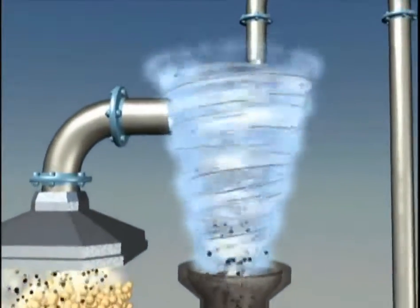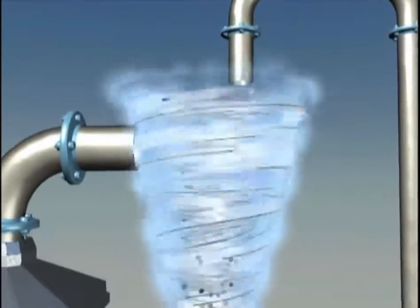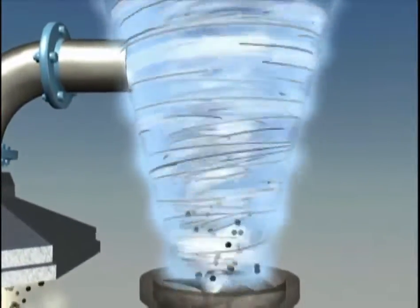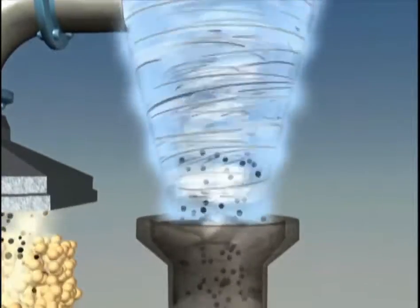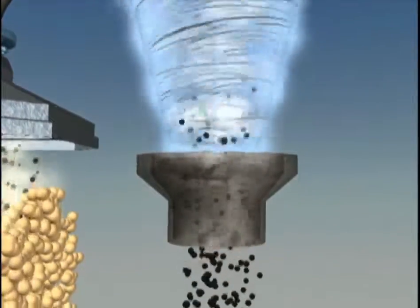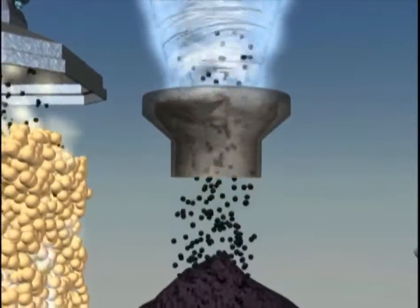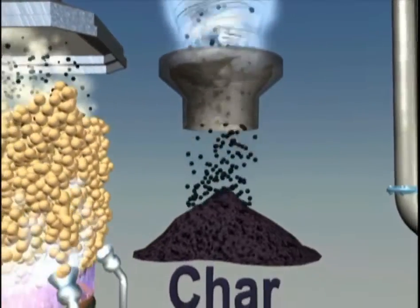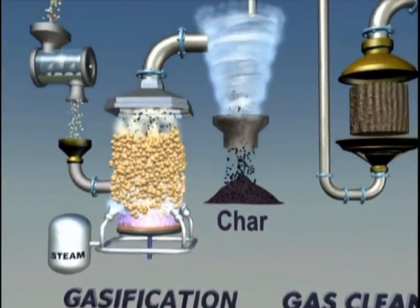Char, a solid byproduct of gasification, is typically removed using a cyclone. Cyclonic separation allows removal of particulates from a gas stream without a filter by using rotational effects in combination with gravity to collect the particles.